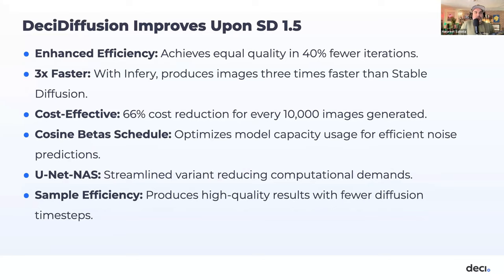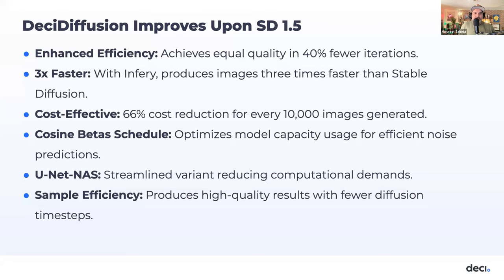The result is Desi Diffusion — a model with enhanced efficiency that achieves the same image quality in fewer iterations. When coupled with Inferry, our proprietary inference engine, Desi Diffusion is three times faster and produces high-quality images more swiftly. This translates to a 66% reduction in cost for every 10,000 images generated. We introduced a cosine beta schedule and a new UNet called UNet NAS that optimizes performance, and it's also sample-efficient — producing top-tier results with fewer diffusion time steps.